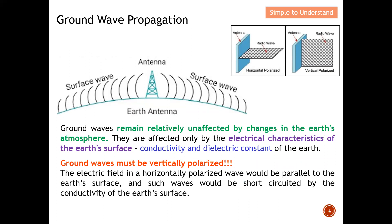Ground wave remains relatively unaffected by changes in the earth's atmosphere, since the atmosphere is too far away. Instead, ground waves are affected only by the electrical characteristics of the earth's surface — specifically the conductivity and the dielectric constant of the earth, which determine how far the ground wave can propagate.